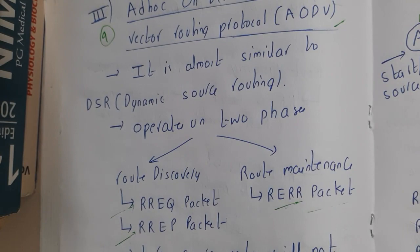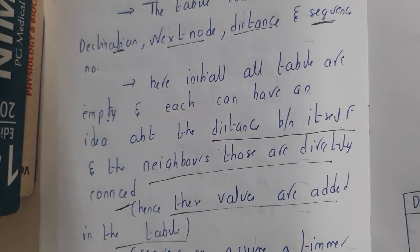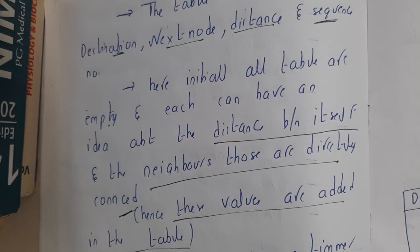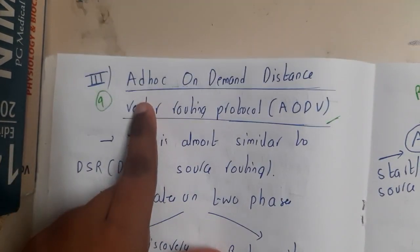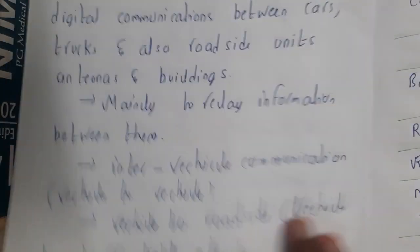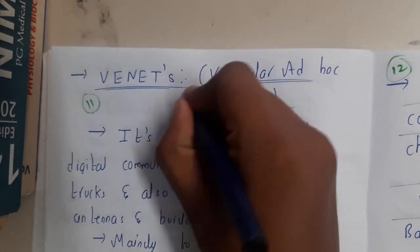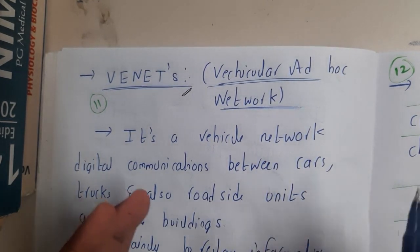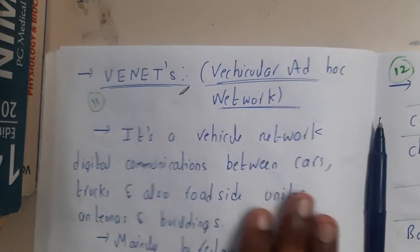We are now done with all four routing algorithms. The first is DSDV — Distance Sequence Distance Vector. Then DSR — Dynamic Source Routing. Then AODV — Ad Hoc On-Demand Distance Vector routing protocol. And finally, ZRP — Zone Routing Protocol. In the next lecture, we'll go through an introduction to VANETs. VANETs are not in our syllabus, but since the syllabus clearly asks for differences between MANETs and VANETs, it has been included.